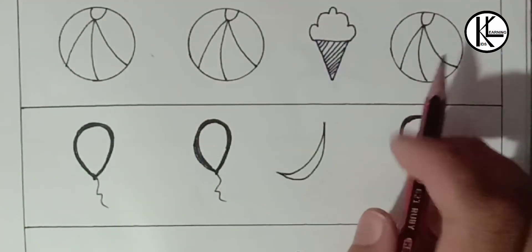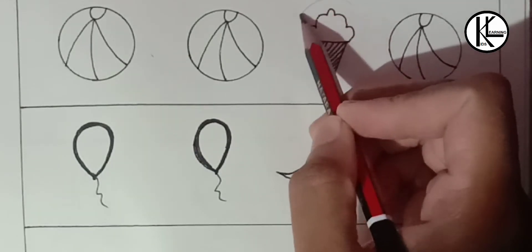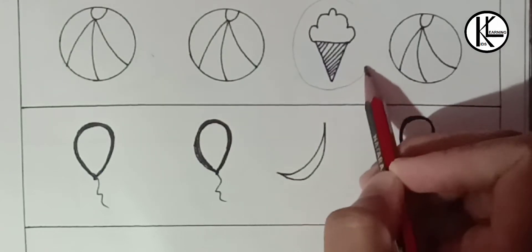Here there are three balls. This ice cream is odd. So kids have to circle this ice cream like this.